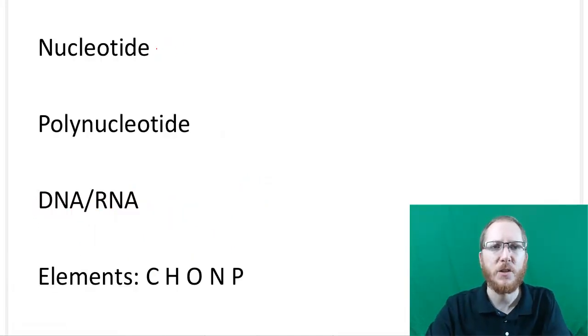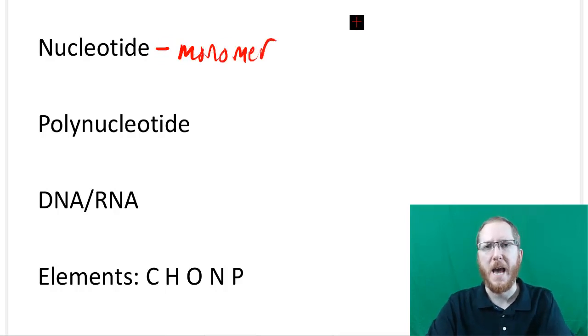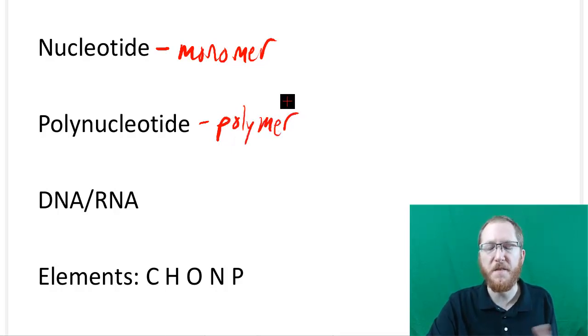Starting off, the nucleotide is the monomer of a nucleic acid. A nucleic acid has a bunch of these nucleotides stuck together. When we stick all these nucleotides together, the polymer of a nucleic acid is going to be a polynucleotide.